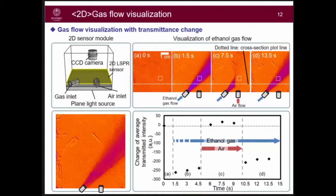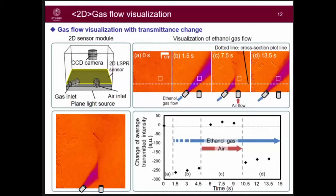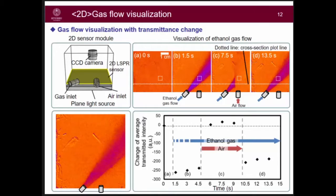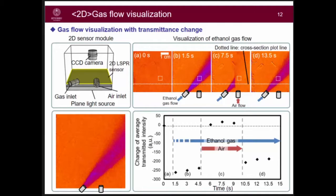Here is a gas flow visualization with transmittance change. We blow an air flow, and a clear change can be seen from this animation showing the position of the flow. The average intensity of this region is plotted here to provide a better understanding.